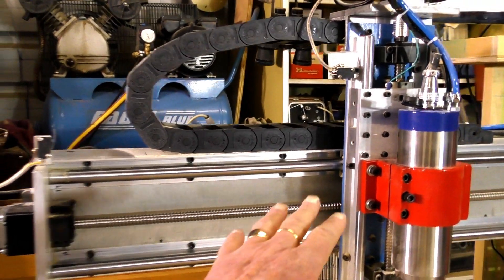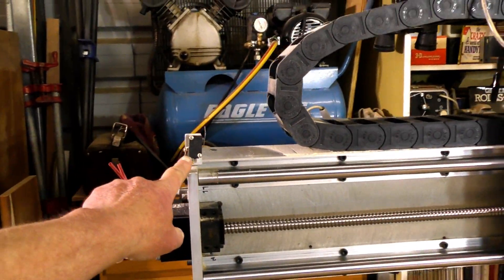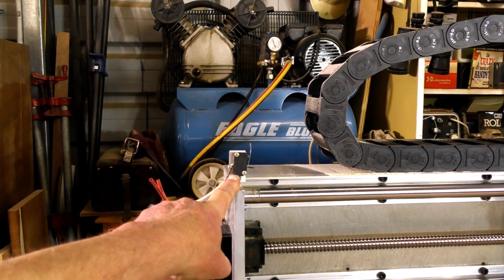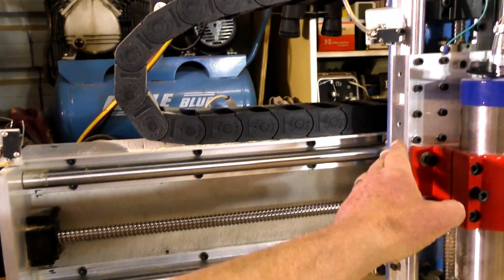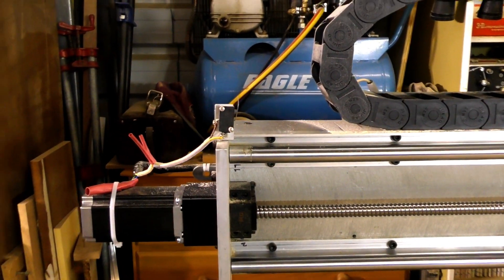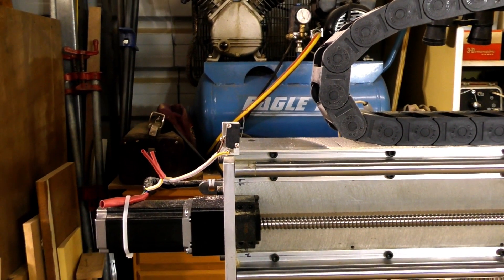Okay, so here's my x-axis and here's my limit switch. Okay, and it's fairly simple. The carriage comes over triggers the switch and registers home.